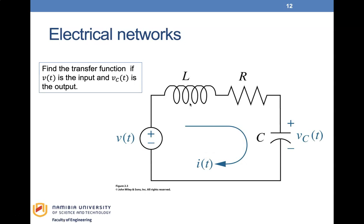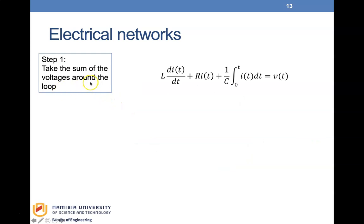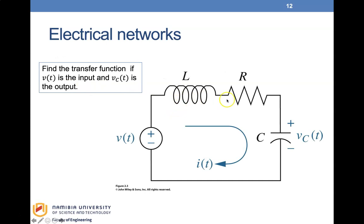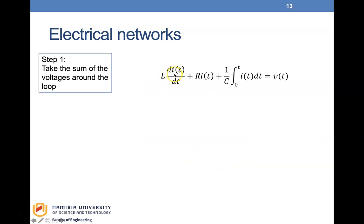Now let's look at a simple electrical network example. The question is: find the transfer function where V(t) is the input voltage and Vc, the voltage across the capacitor, is the output voltage. Step one: take the sum of voltages around the loop. Applying KVL gives: L·di/dt + R·i + (1/C)∫i dt = V(t), where each term represents the voltage across the inductor, resistor, and capacitor respectively.